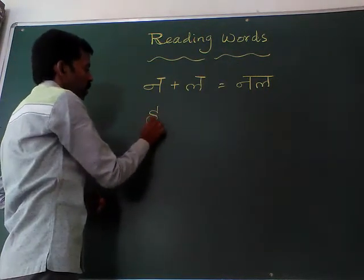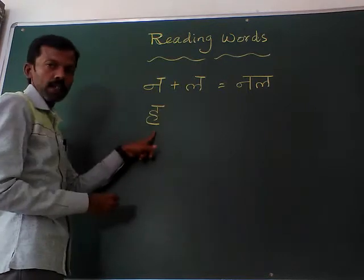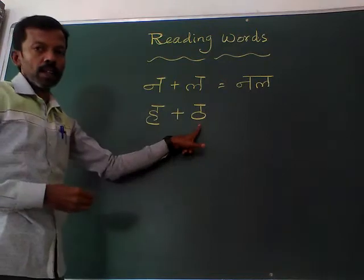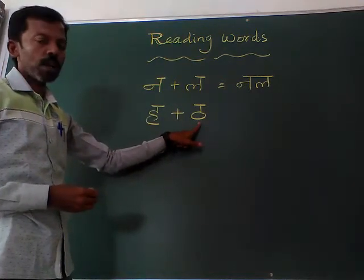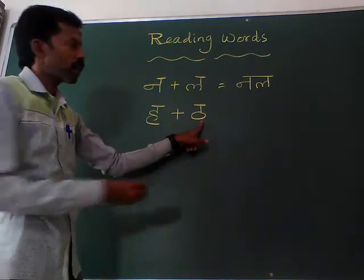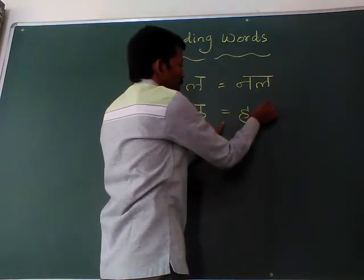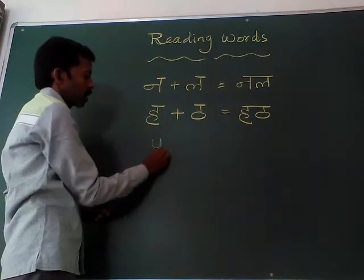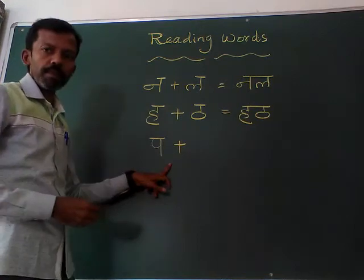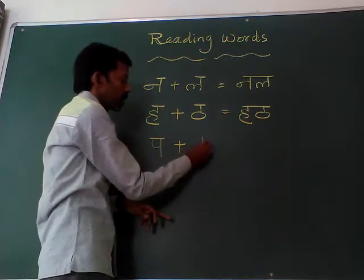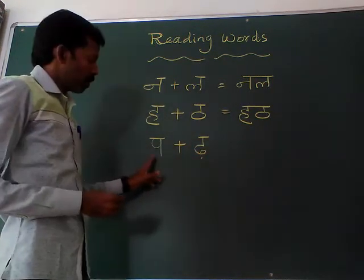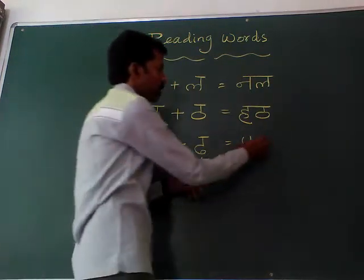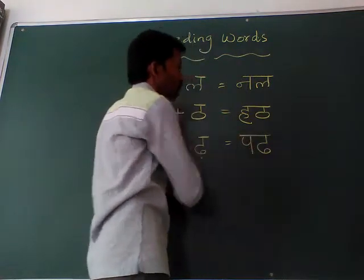Second one: Ha plus Tha. The last letter is Tha. When you add and read, you should not say 'Tha' — you should say 'il'. So when you read the second letter Tha, you should not say 'Tha', you should say 'il'. Let's see some more words for practice.